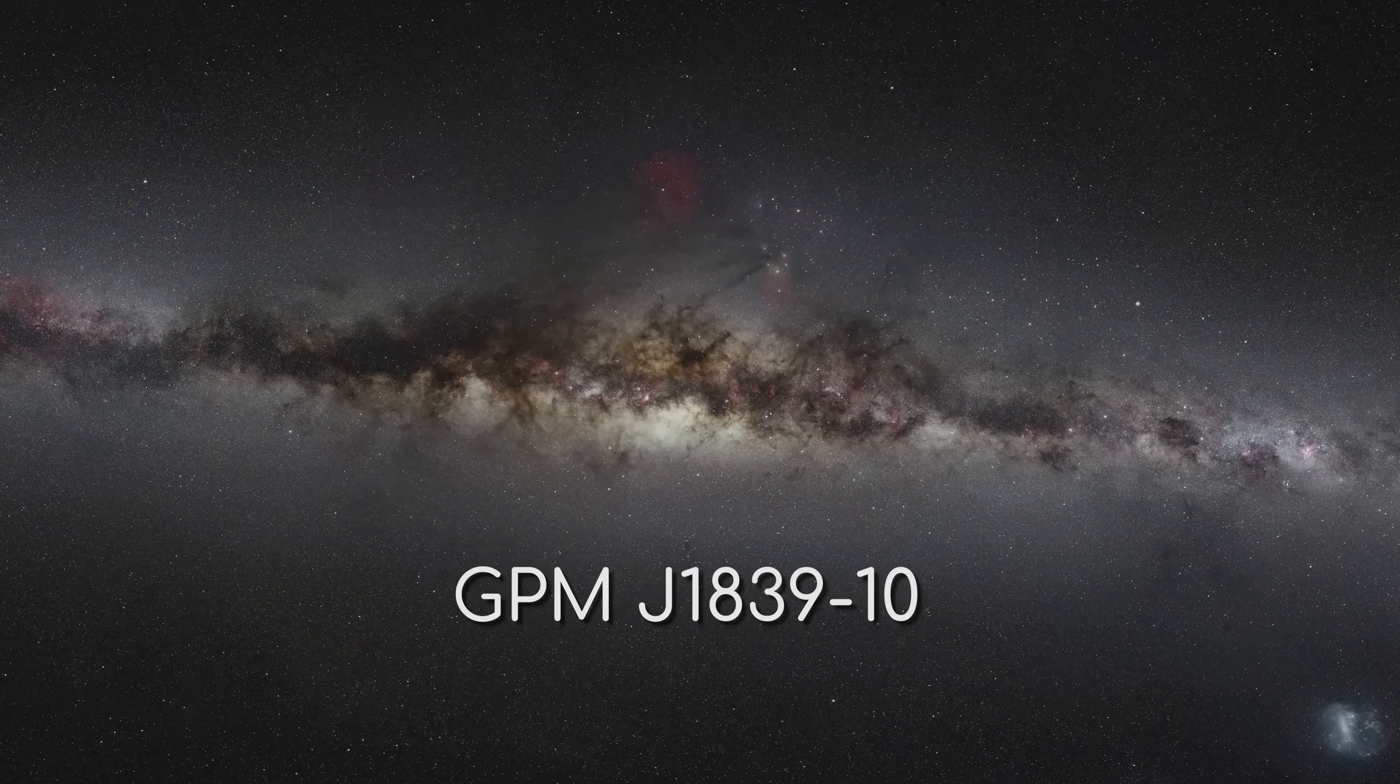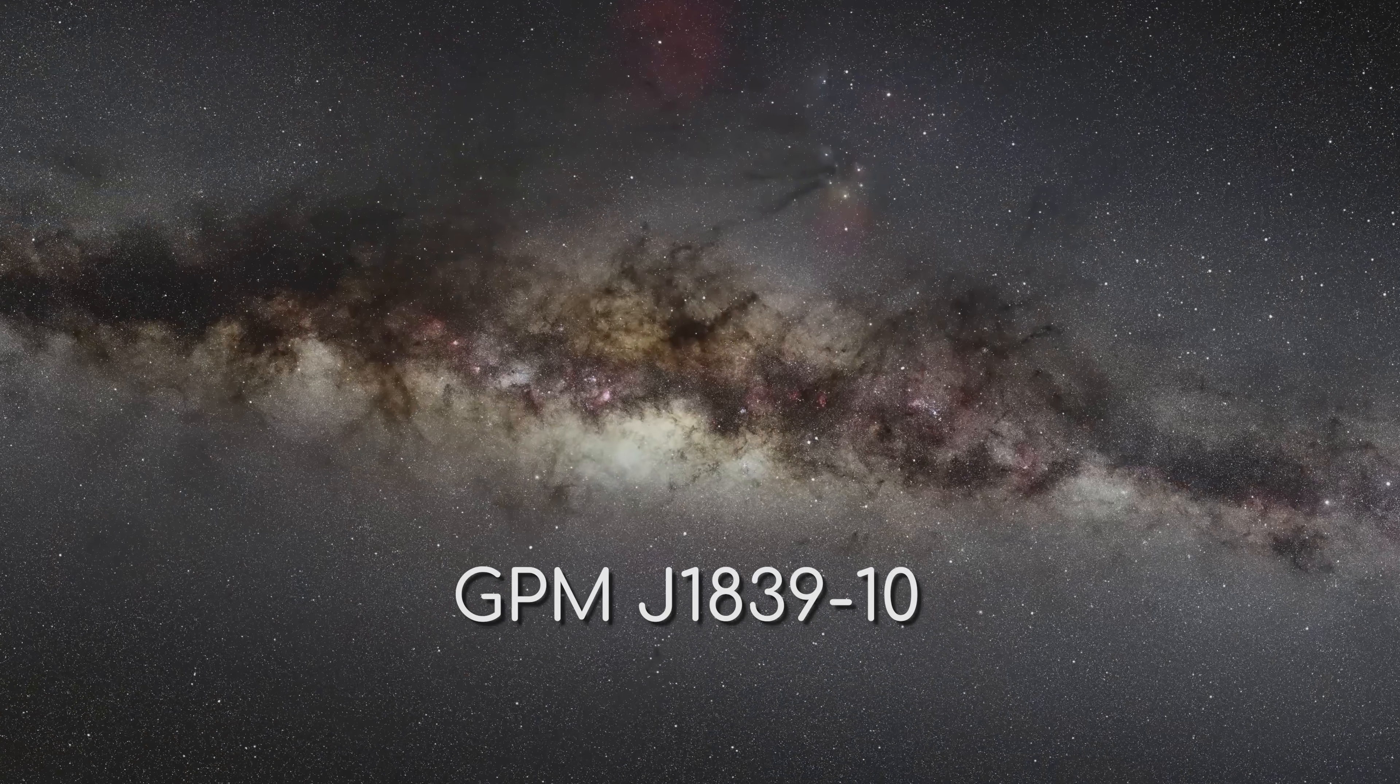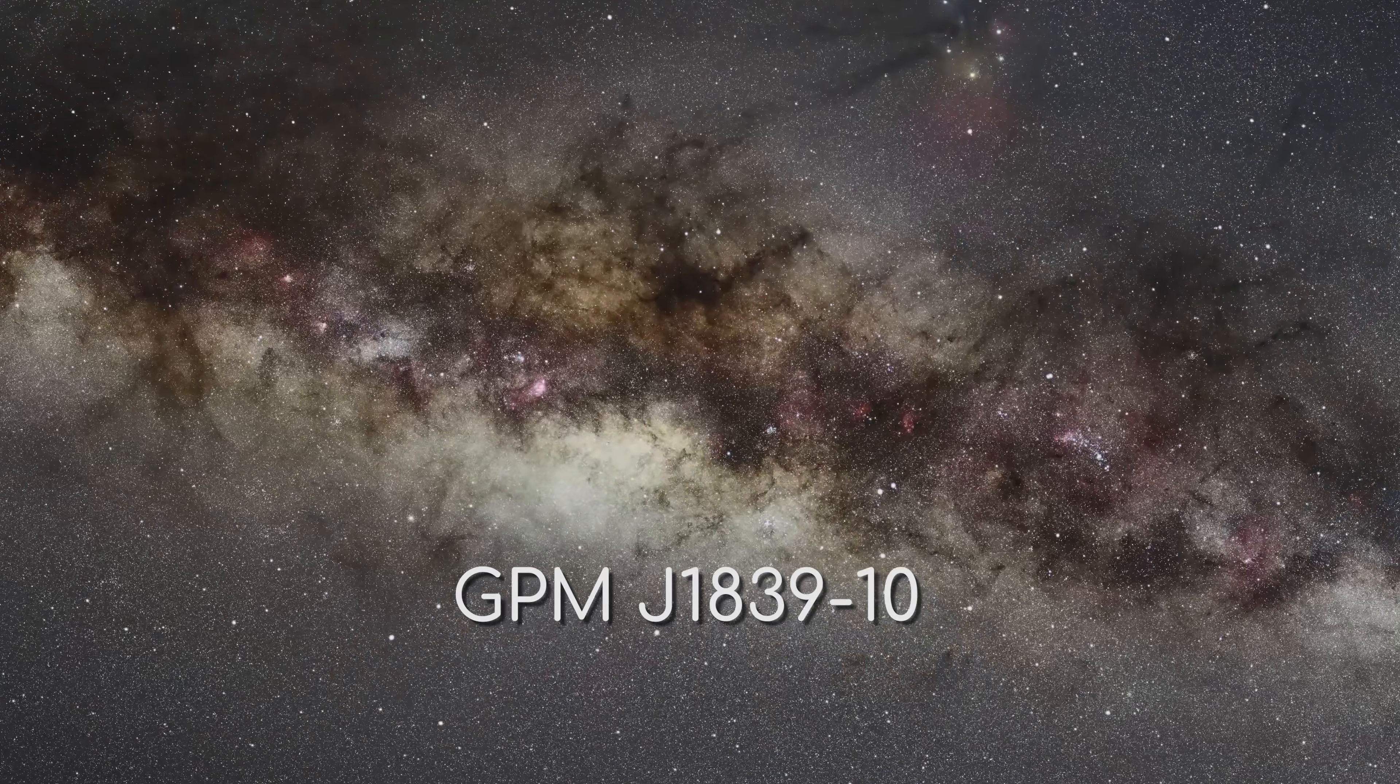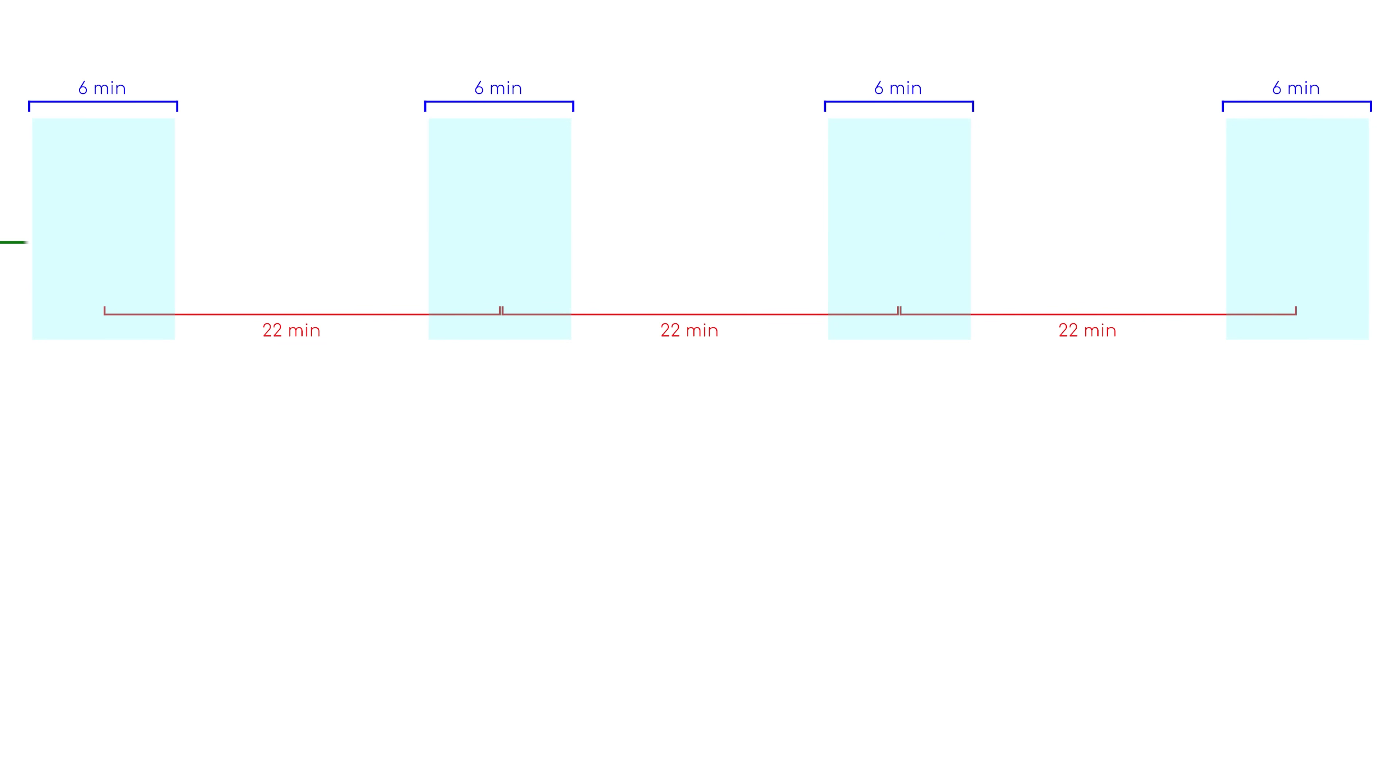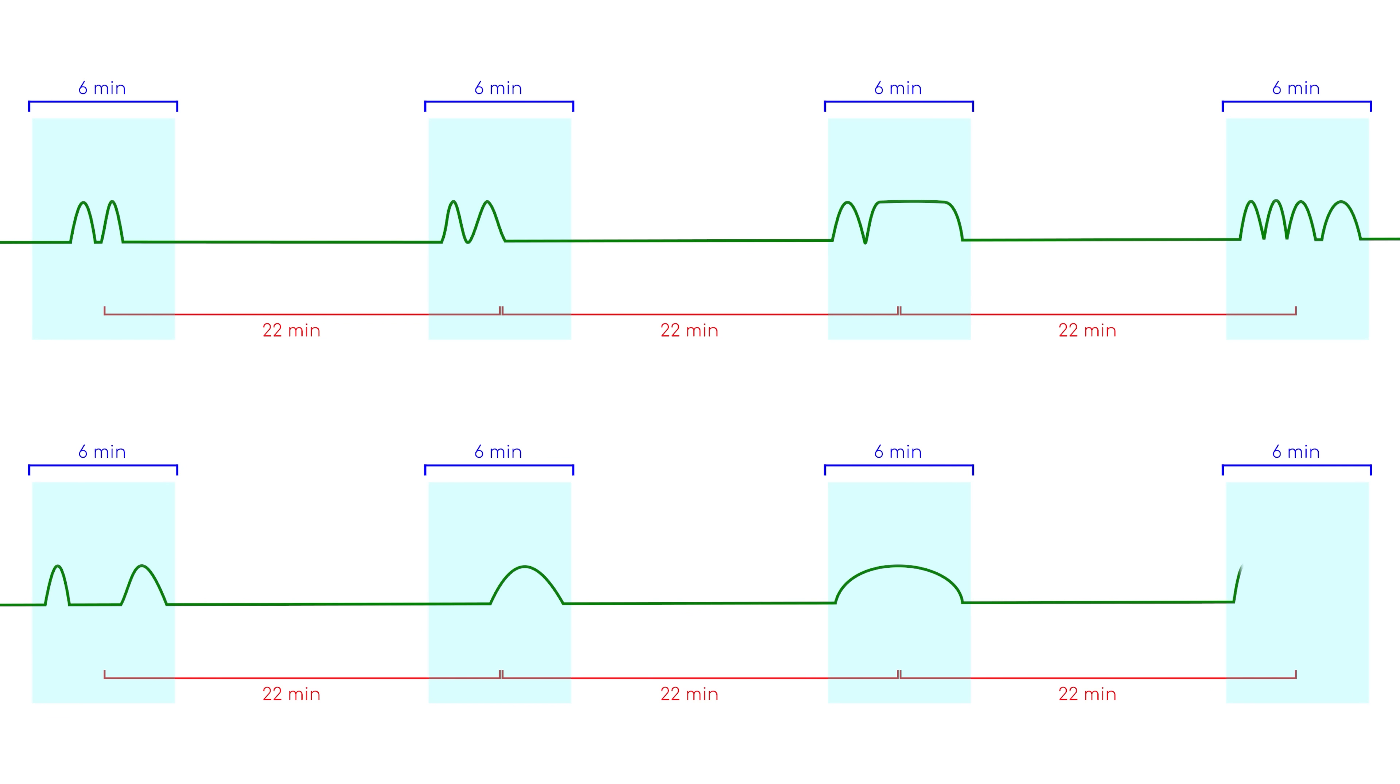The location of the source, named GPM J1839-10, is roughly 18,000 light years away. Its signal arrives as pulses that can last any amount of time between 30 seconds and 5 minutes. These pulses can appear at any time in a window of just over 6 and a half minutes, which is centered on 22 minutes after the previous pulse.